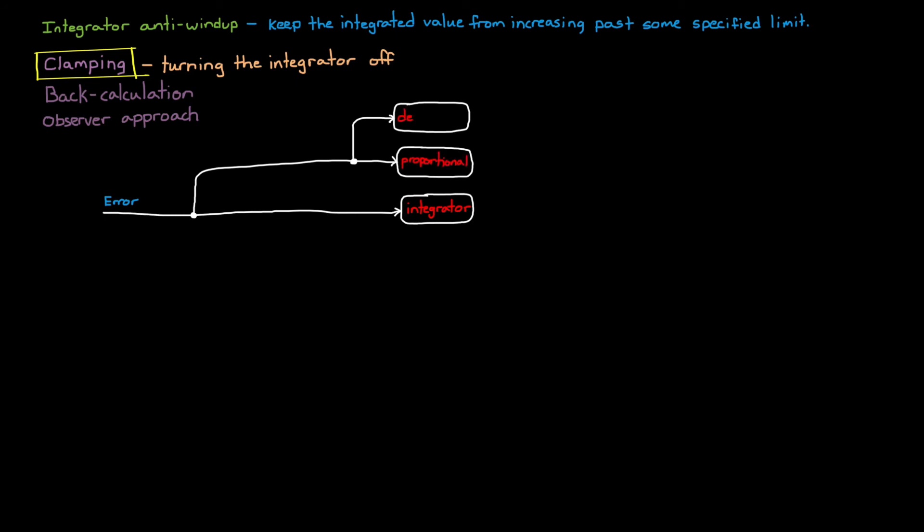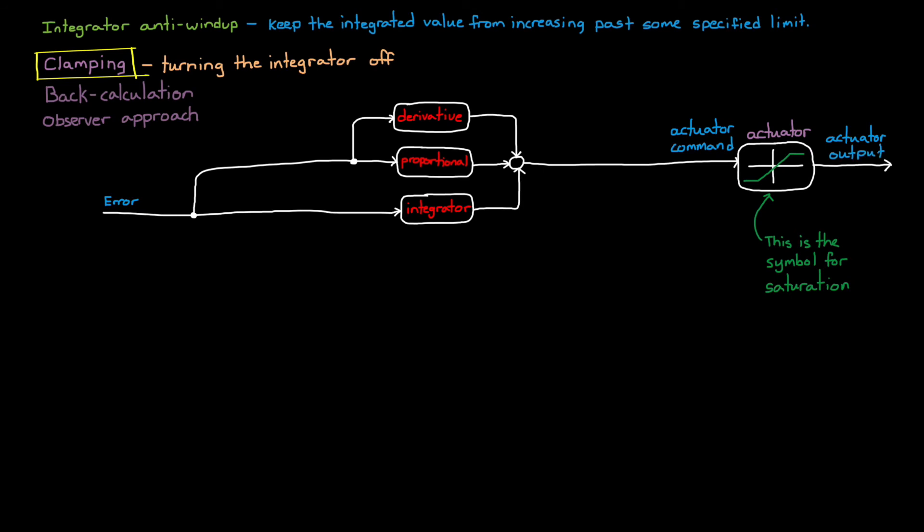We'll start with our familiar PID control law that acts on the loop error and generates an actuator command. But as we just learned, sometimes an actuator can't follow the given command, and it saturates. So even if a large actuator command comes in, the output will be capped at some value. So the first thing we want to do with our PID controller is make sure that it doesn't output a value outside of what the actuator can handle. We can do that by simply limiting the output of the controller with its own saturation check.